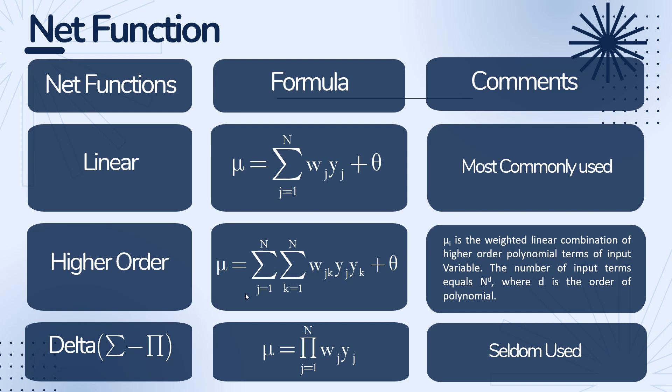mu is equal to double sum wijk yj yk plus theta. In this formula we multiply...